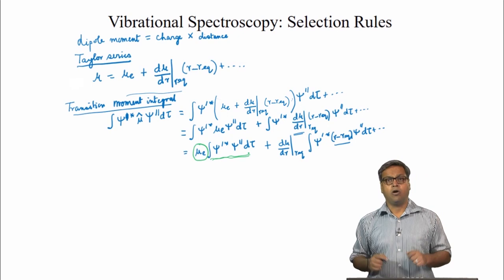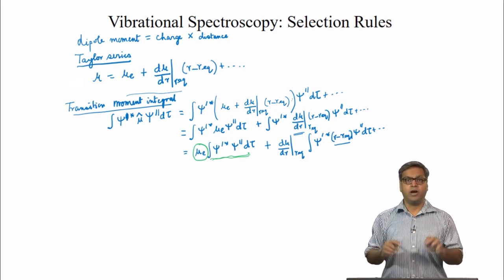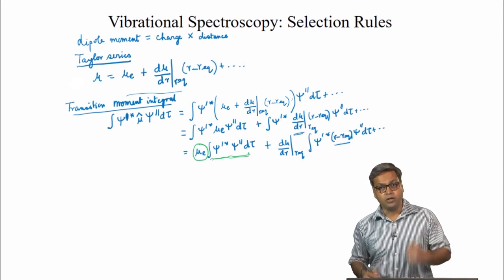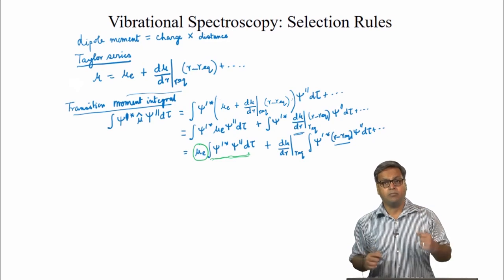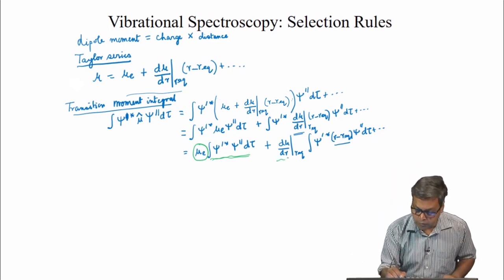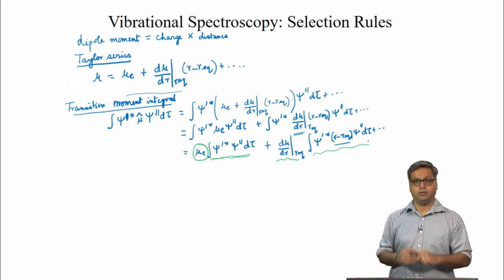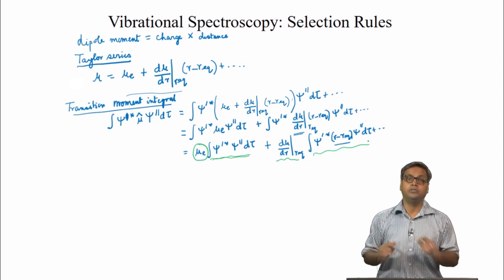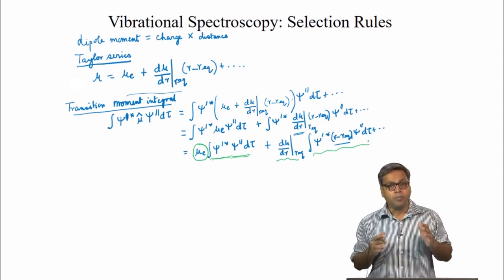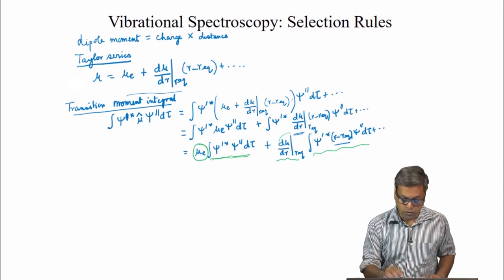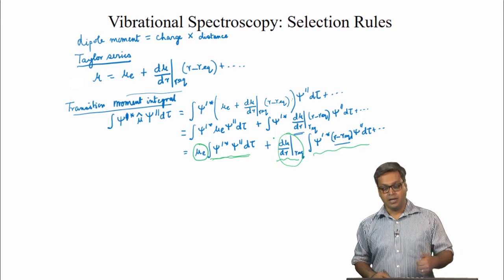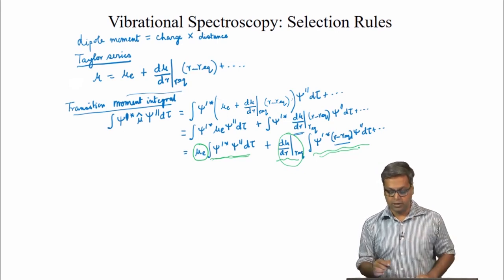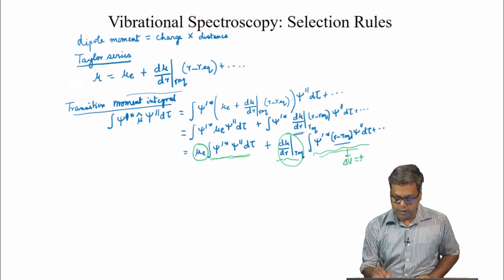Let us focus on the second term. For a vibrational transition to happen, the second term has to be nonzero, meaning both its parts must be nonzero: the gradient (dμ/dr) and the integral. The gradient being nonzero is the gross selection rule. Solving the integral should provide the specific selection rule, giving us Δv = ±1.